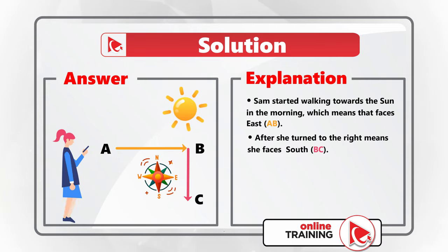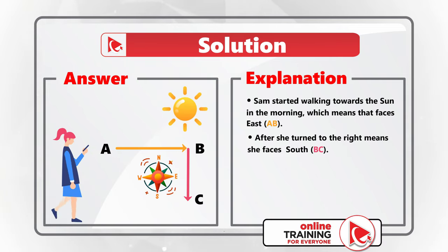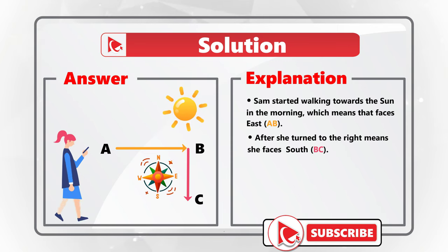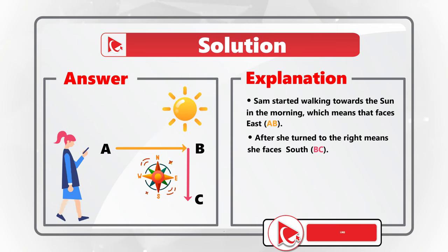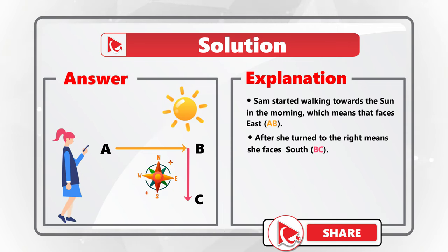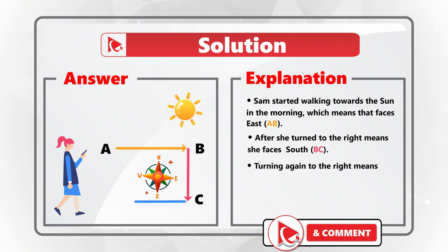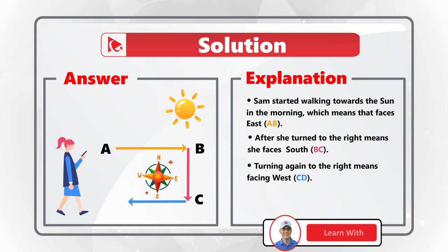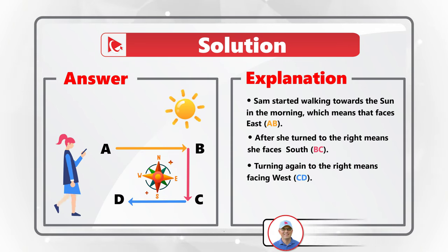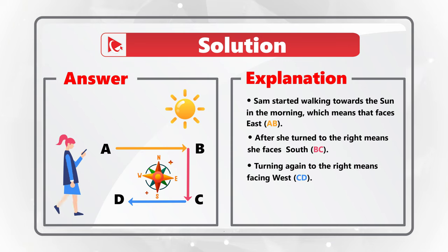If her first direction is shown by ray AB, after she turns right it's shown by ray BC. Turning again to the right means that now Sam is facing west, which is displayed by ray CD.